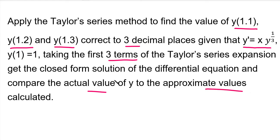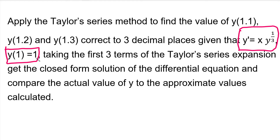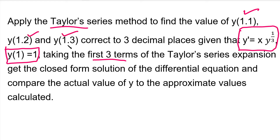From the question, we get the differential equation y' = x·y^(1/3) and the initial condition y(1) = 1. We use these two values and apply the Taylor series formula. We use the first three terms of the Taylor series formula to find y(1.1), y(1.2), and y(1.3).